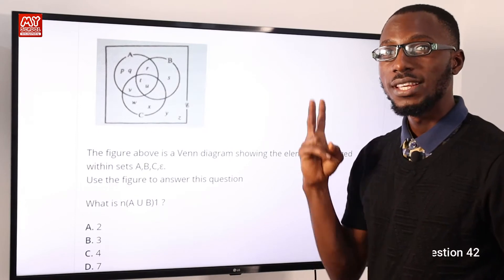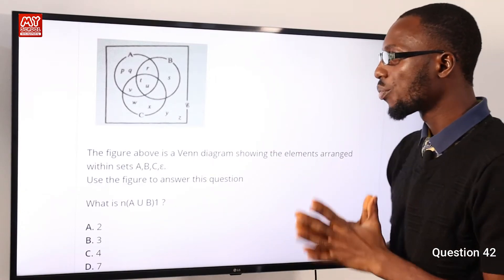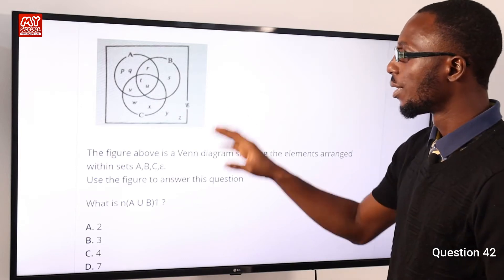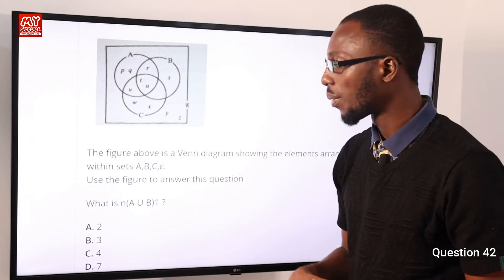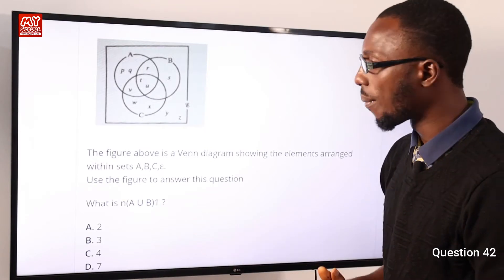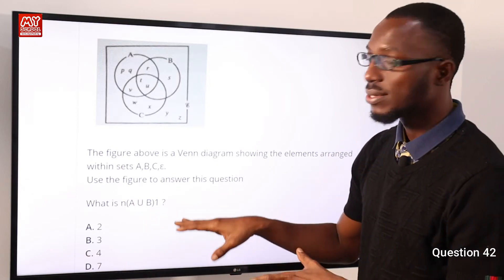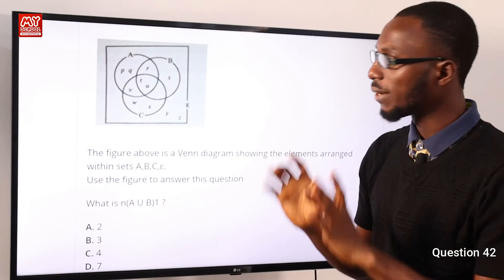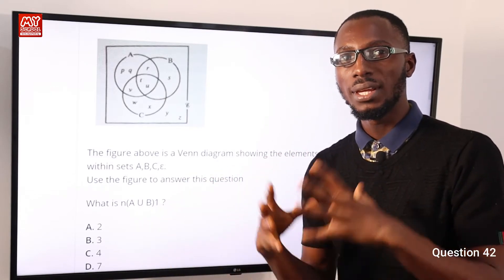Question 42. The figure above is a Venn diagram showing elements arranged within set A, set B, set C and the universal set. The question asks: what is the number of A union B complement? That means what are the elements not present when A is in union with B. First, we find what elements are in A union B — all elements in A and B combined.